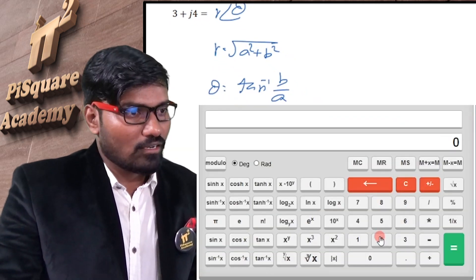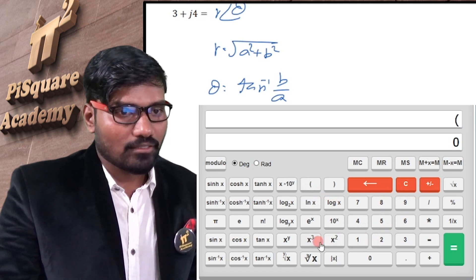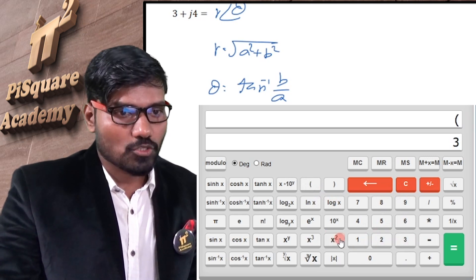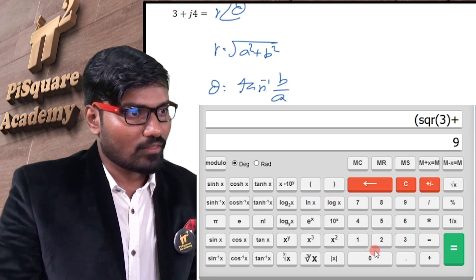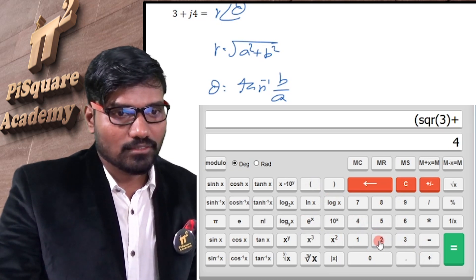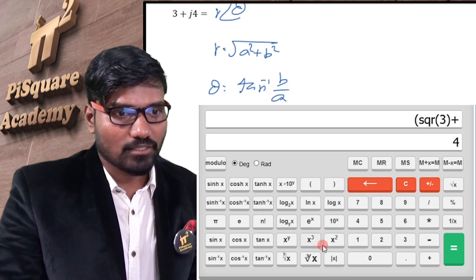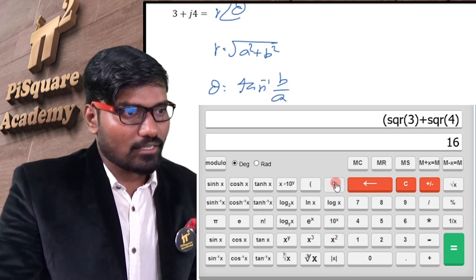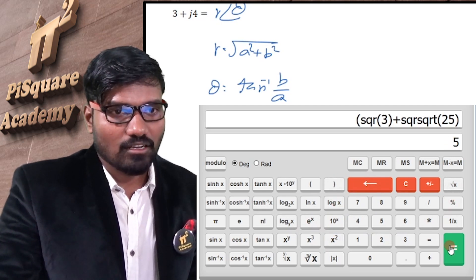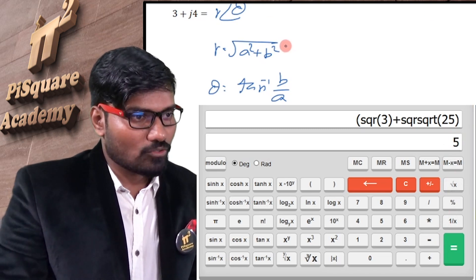So r value is a square plus b square, open the bracket, a is 3, 3 square plus 4 square, close the bracket, sorry, 4 square. Close the bracket, and under root, answer is 5. So r is equal to 5.